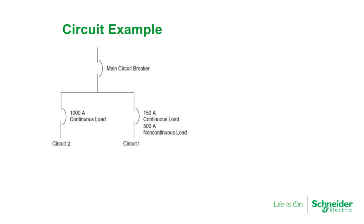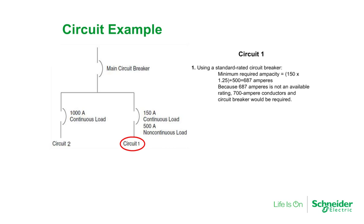Now let's take a look at some circuit design examples. In this example, there are two branch circuits being fed from the main circuit breaker. Looking at circuit number 1: when using a standard rated circuit breaker, the minimum required ampacity would be 150A times 1.25 — derived from the NEC requirement of 125% loading — plus 500A for the non-continuous load, which yields 687A. Because 687A is not a standard rating, a 700A conductor and circuit breaker would be required.